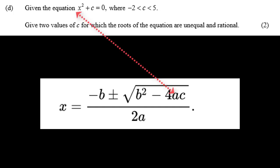Right, so now in our case, we have a equals 1 and b equals 0. So the formula for the roots reduces to plus or minus the square root of minus 4c over 2.